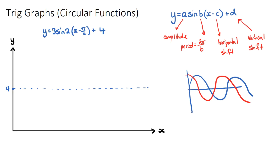With an amplitude of three, the function goes up three and down three from its midpoint of four — so it reaches a maximum of seven and a minimum of one. I'll put dotted lines at one and seven. These dotted lines will act like training wheels when we first learn to sketch a circular function.